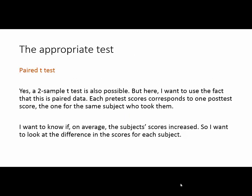The appropriate test to use is a paired t-test. This is that situation — the two-sample special — where we're comparing means of quantitative data. It is possible to use a two-sample t-test, but here I want to use the fact that this is paired data. I want to compare the difference in score — each person's post-test score minus their pre-test score — to determine if that's positive, if there was an increase.